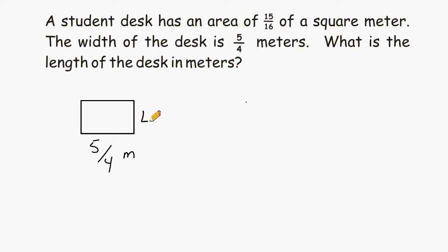So when we multiply the length times the width of the desk, we would come up with an area of 15 sixteenths of a square meter, which is very close to one whole square meter. So basically we have a given width of 5 quarters and we have to multiply that by some other side that is going to be equal to 15 sixteenths.